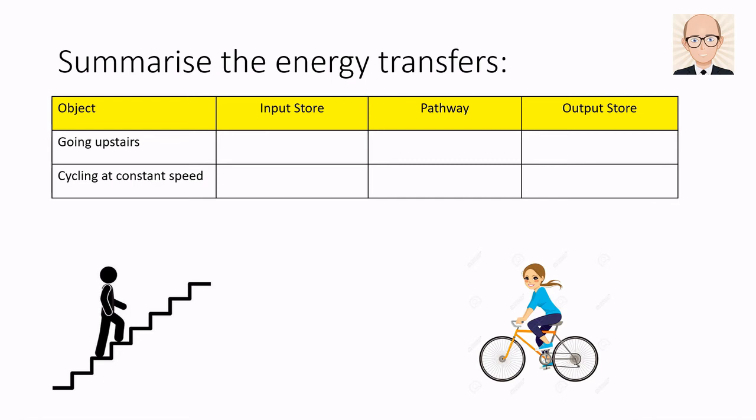Looking at the person on the stairs then, we can describe the transfer as being from the chemical store in their food, or blood glucose, to the gravitational potential store as they push themselves further from the earth. The pathway in this case will be via mechanical work, as forces are being used to push their body upwards.